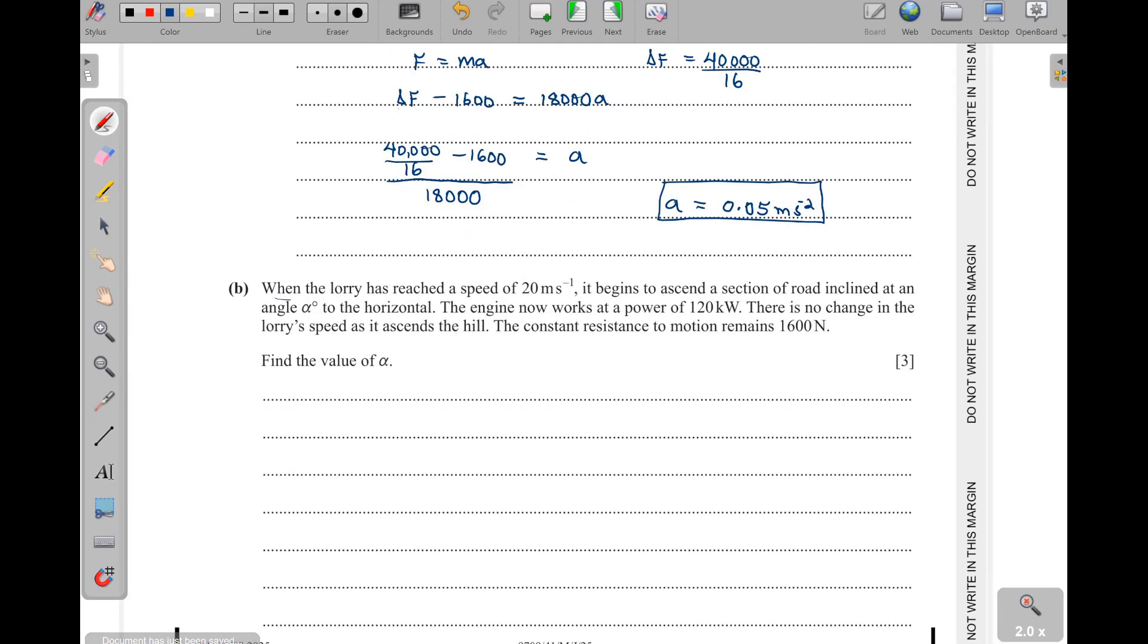Then next, part B: when the lorry has reached a speed of 20 meters per second, it begins to ascend a section of the road inclined at an angle of alpha to the horizontal, motion on an incline plane. The engine now works at a power of 120 kilowatts. There is no change in the lorry speed as it ascends the hill. That means the speed it was moving with at the section is the same speed that we are going to base on.